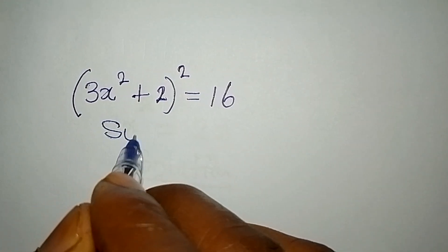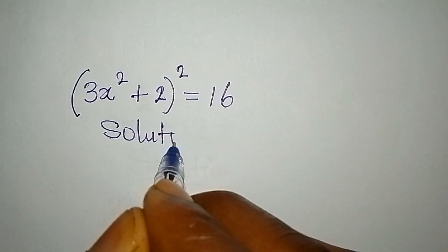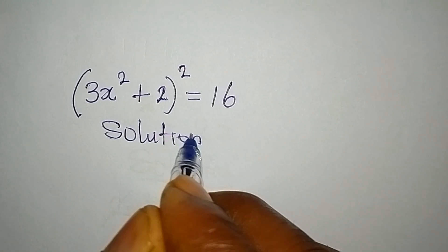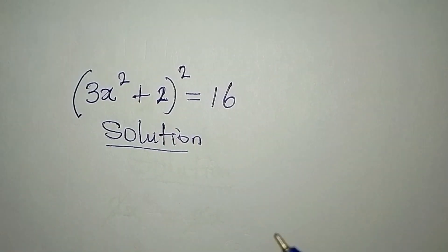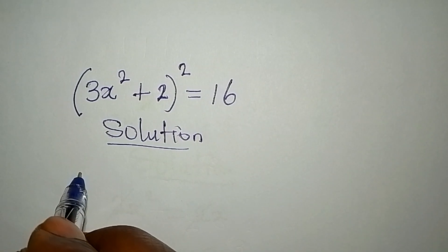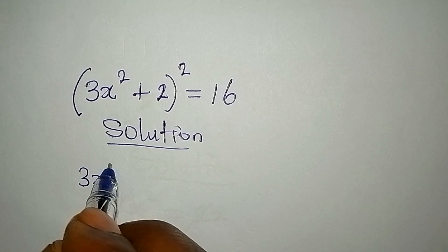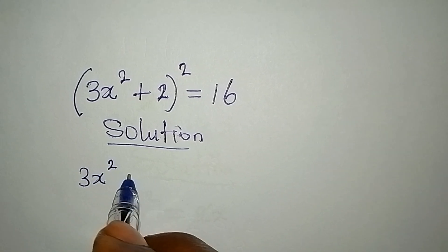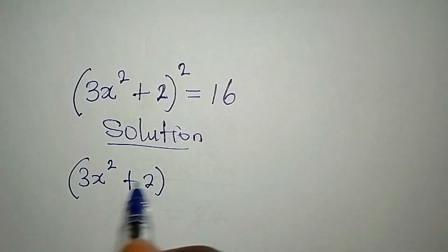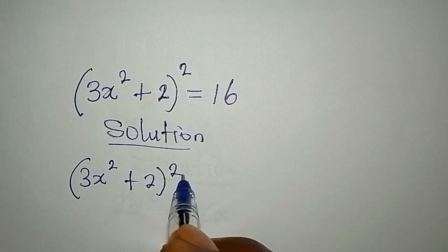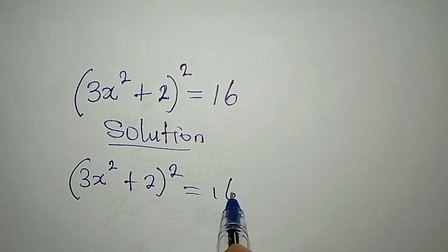Hello everyone. Let's provide the solution to this problem: (3x squared plus 2) to the power of 2 equals 16.